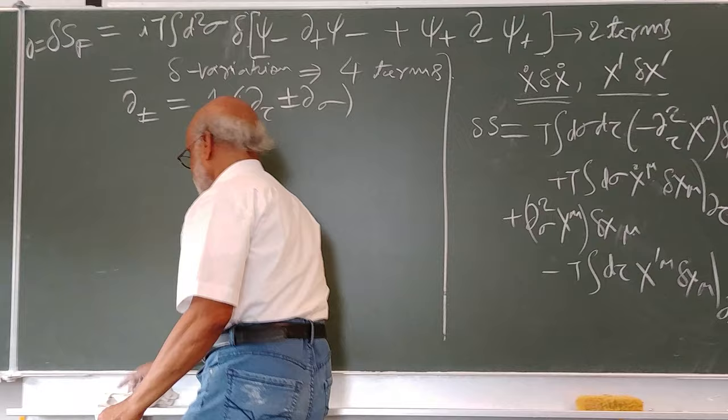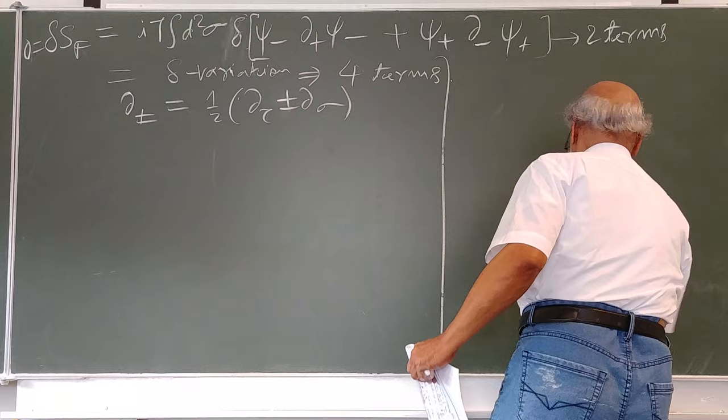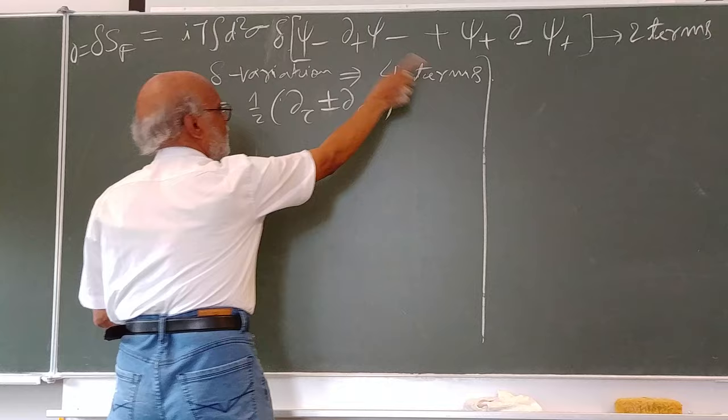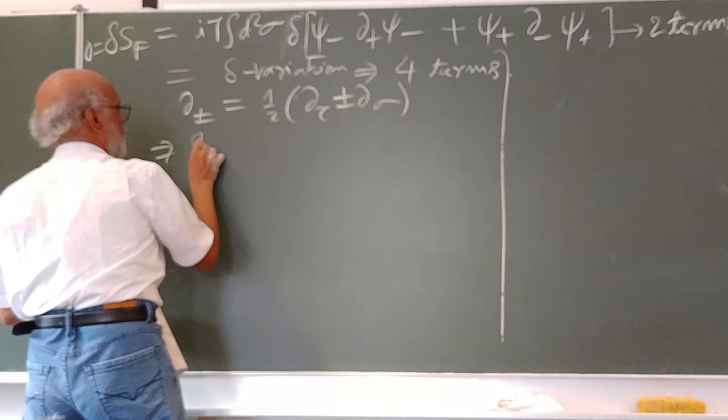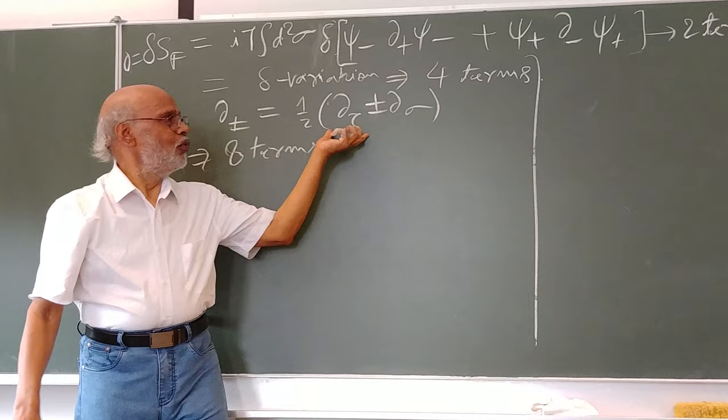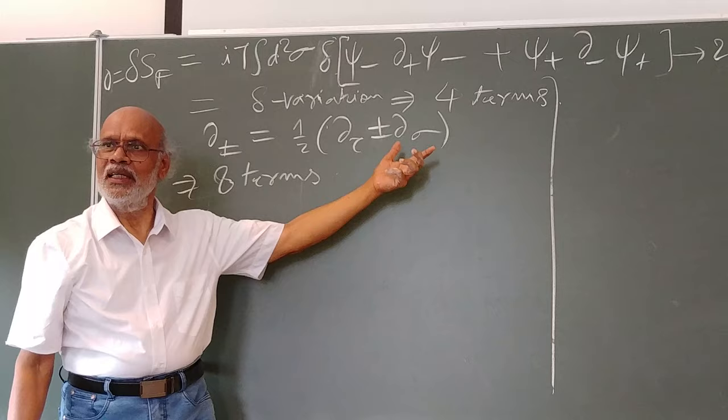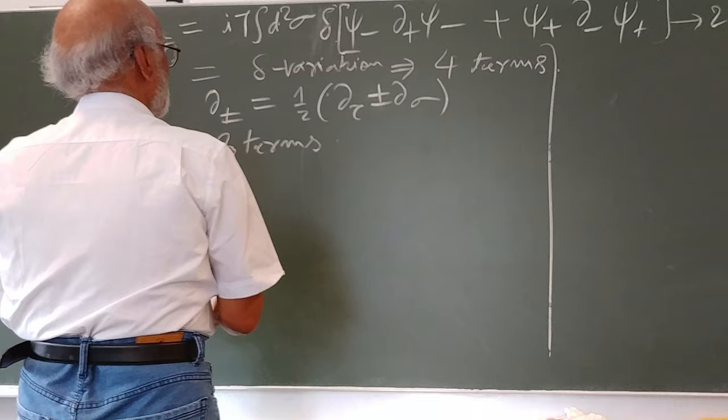So you follow the same steps. You start with this action, use the variation principle, and you get four terms. Now using this delta relation, you will have eight terms: four terms having del-tau and four terms having del-sigma.